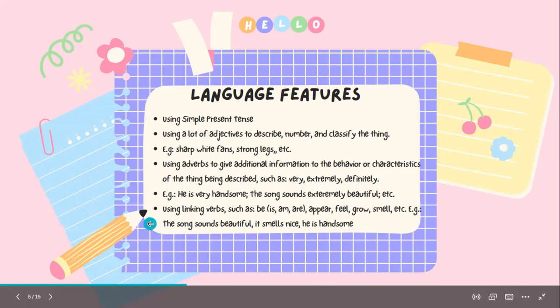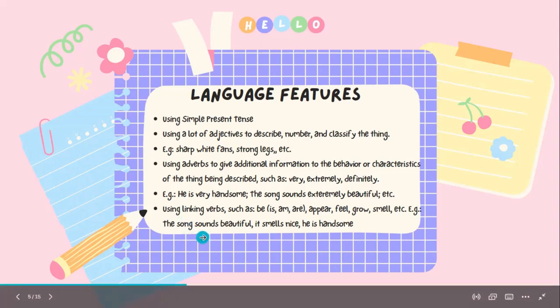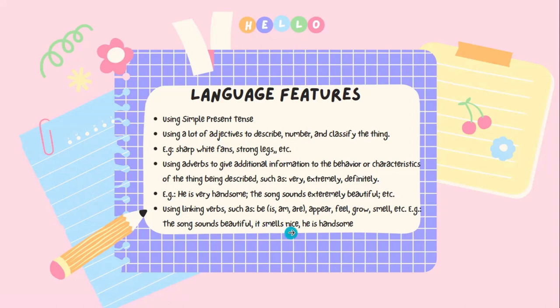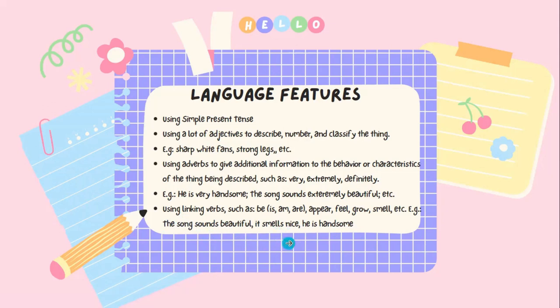Dan language feature yang terakhir yaitu using linking verb atau menggunakan kata kerja penghubung, such as be, is, are, appear, feel, grow, smell, and etc. Contohnya: 'The song sounds beautiful,' 'It smells nice,' 'He is handsome.' Nah, ini adalah ciri-ciri bahasa dari descriptive text.